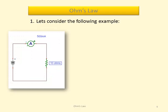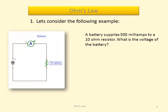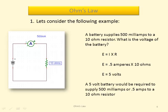Let's consider the following example. A battery supplies 500 milliamps to a 10 ohm resistor. What is the voltage of the battery? Well, we know the formula, so let's apply it. We have a current of 500 milliamps going through a 10 ohm resistor. That gives us a voltage of 5 volts. So we can say that a 5 volt battery would be required to supply the 500 milliamps, which is the same as 0.5 amps, to the 10 ohm resistor.